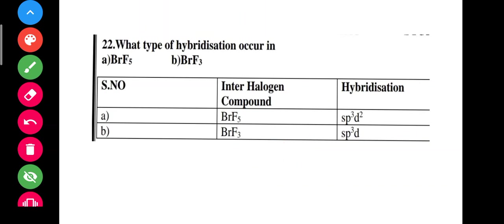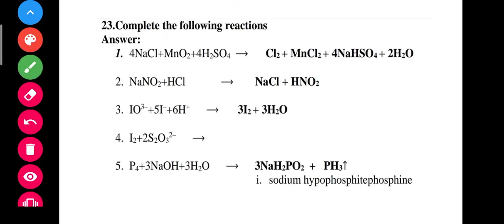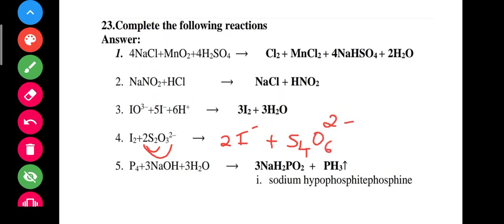For the chemical reactions: I2 dissociates to give 2I minus. I2 has charge minus 1, so 2 times 2 equals 4, then 2,3,6 and 2,6 gives the answer: 2I minus plus S4O6 2 minus.